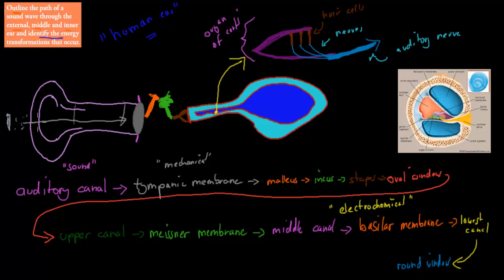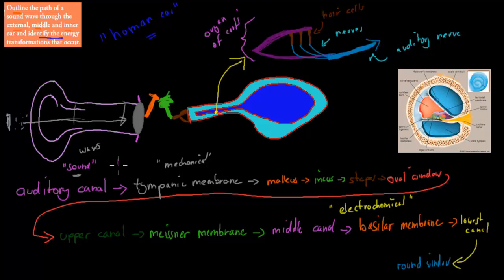While sound is actually going through the auditory canal, it's in the form of sound — these compression and rarefaction waves. So sound to mechanical happens between the pinna and the tympanic membrane. Once the sound hits the tympanic membrane, it is changed from sound energy into mechanical energy. Mechanical energy just means movement — the tympanic membrane moves back and forth when air hits it.